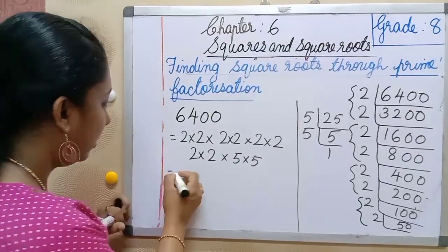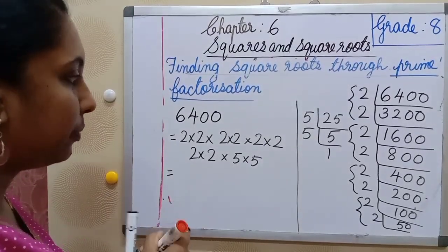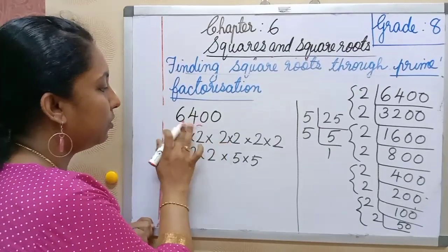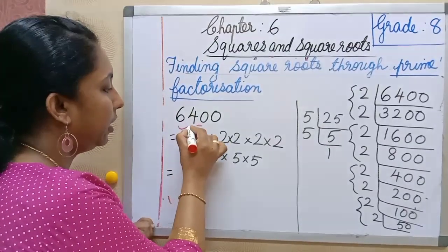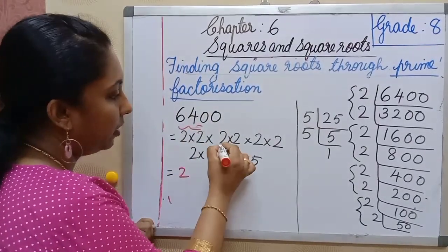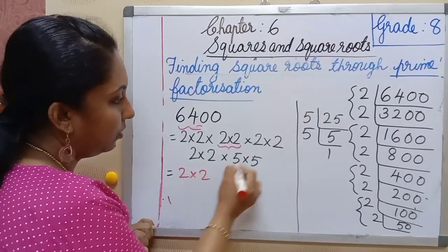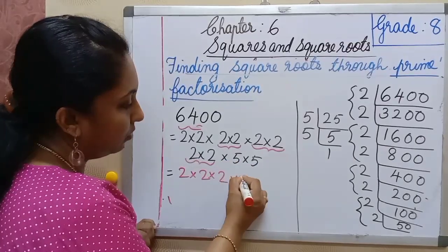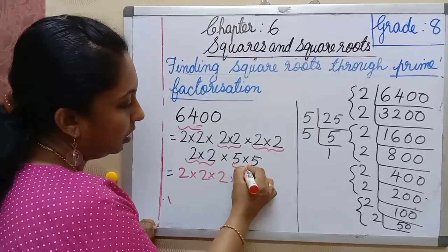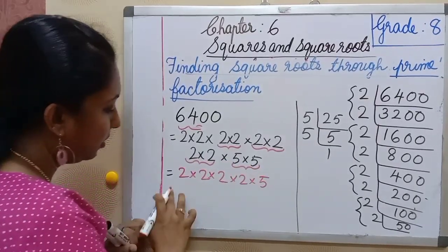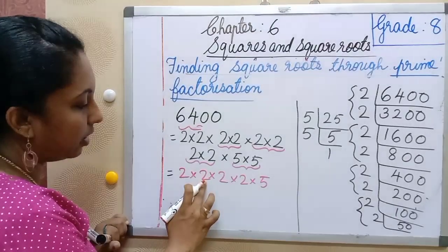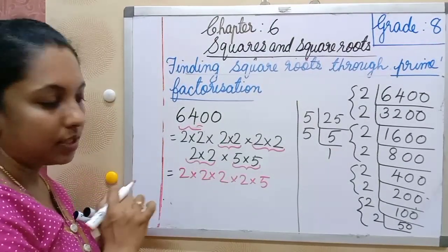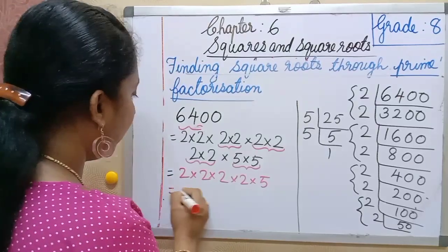Now we pair up the factors: one pair of 2s, another pair of 2s, another pair of 2s, another pair of 2s, and one pair of 5s. From each pair we take one number: 2 × 2 × 2 × 2 × 5. So 2 × 2 = 4, 4 × 2 = 8, 8 × 2 = 16, 16 × 5 = 80. The square root of 6400 is 80.